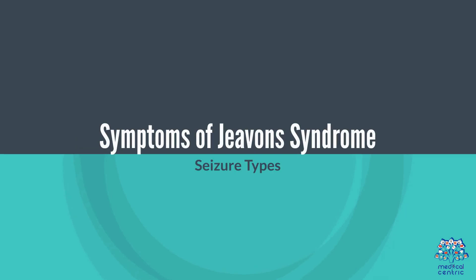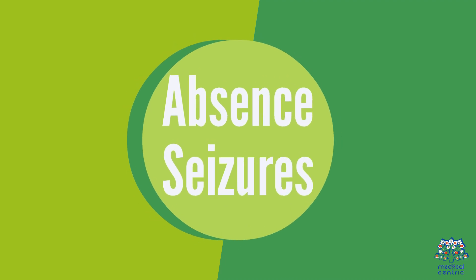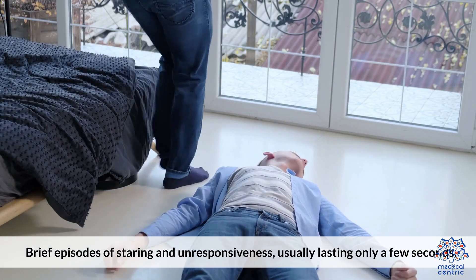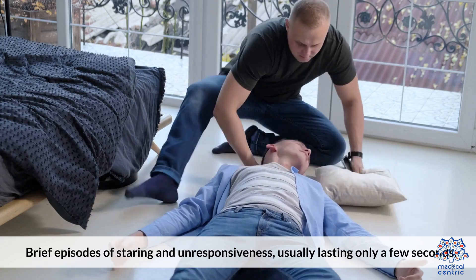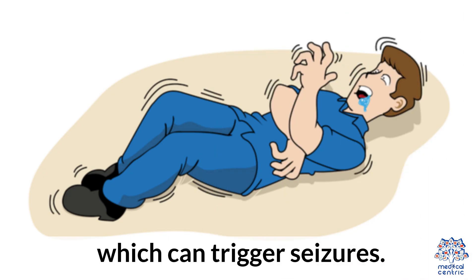Symptoms of Jeevon's Syndrome — Seizure Types. Eyelid myoclonia: rapid, uncontrollable blinking of the eyes, often triggered by light or visual stimuli. Absence seizures: brief episodes of staring and unresponsiveness, usually lasting only a few seconds. Photosensitivity: increased sensitivity to flickering lights or patterns, which can trigger seizures.